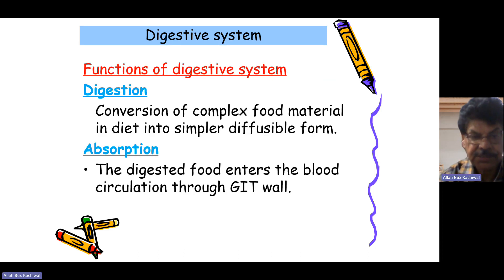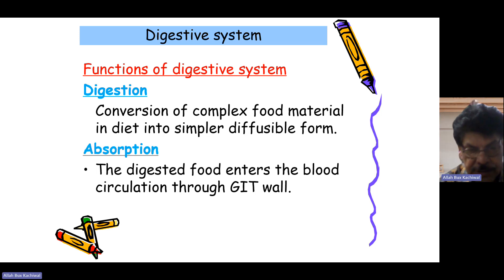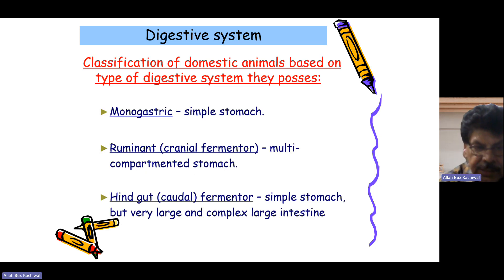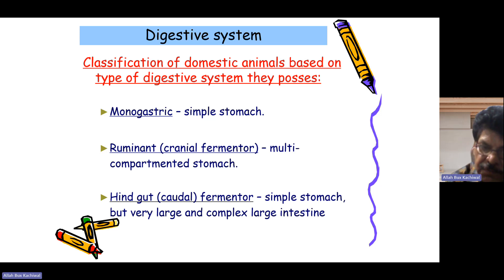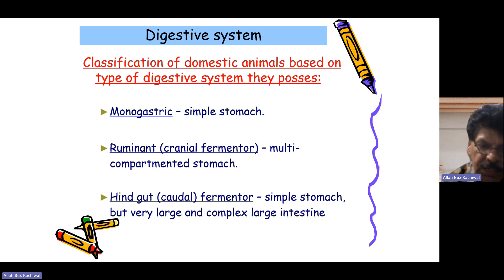The functions of the digestive system include digestion, which is the conversion of complex food material into a simpler, absorbable form, and absorption, where the digested food enters the circulation through the gastrointestinal tract. The digestive system can be classified in domestic animals based on the type: monogastric or simple stomach animals, ruminants like cranial-fermented or multi-compartment stomach animals, and hindgut or cecal fermenters with a simple stomach but large, complex large intestine, like the horse.